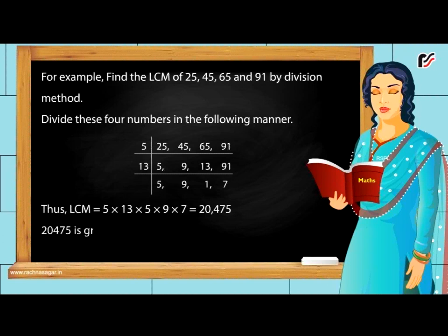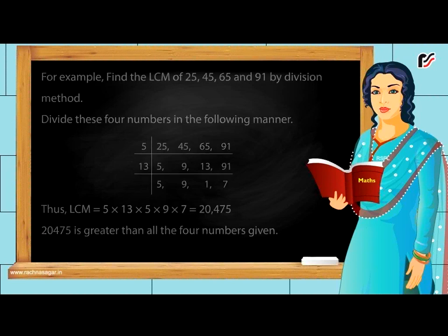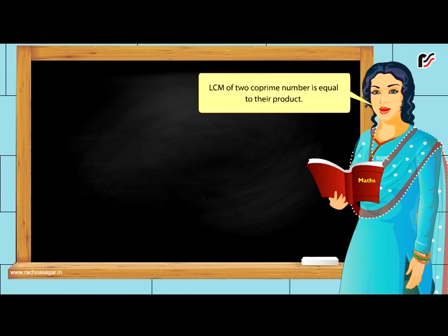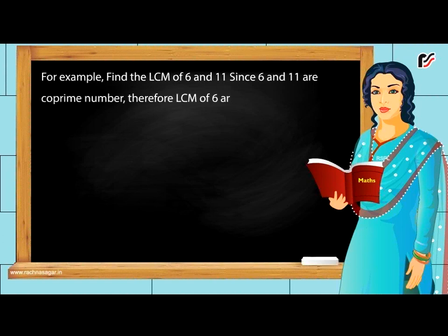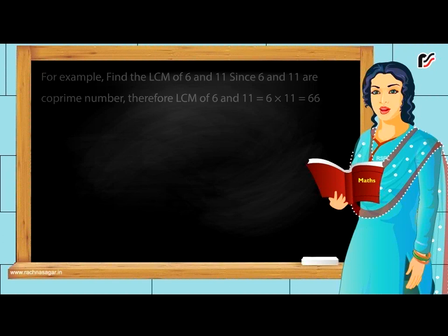20,475 is greater than all the four given numbers. LCM of two coprime numbers is equal to their product. For example, find the LCM of 6 and 11. Since 6 and 11 are coprime numbers, LCM of 6 and 11 = 6 × 11 = 66.